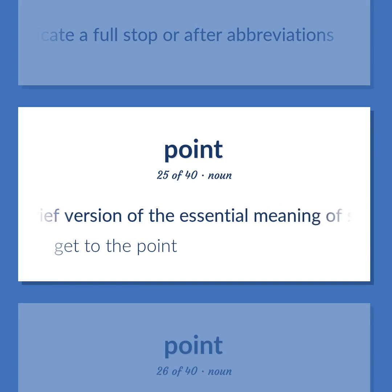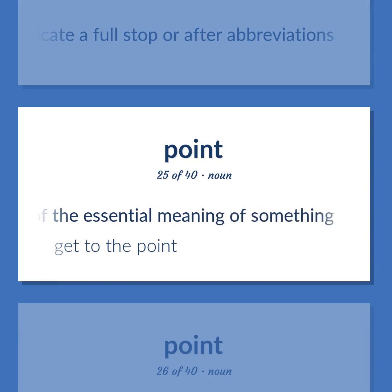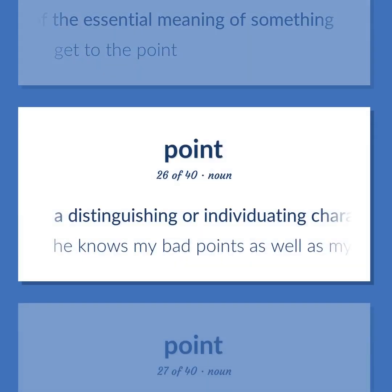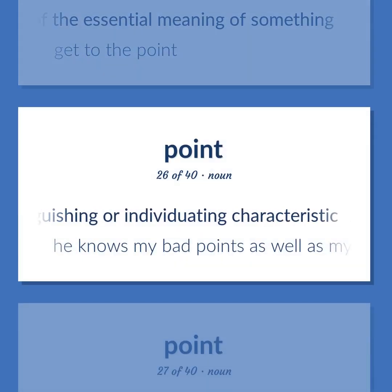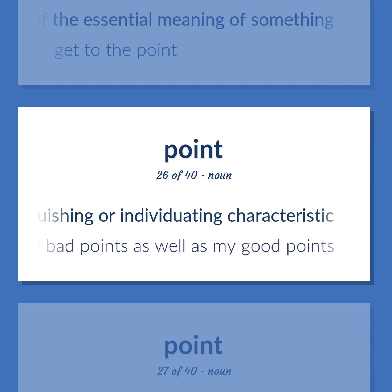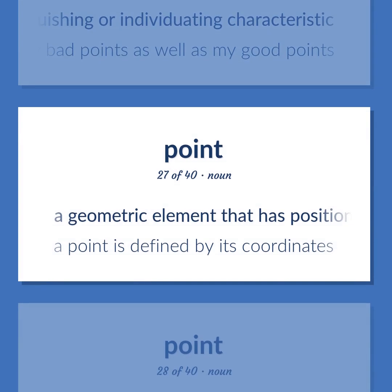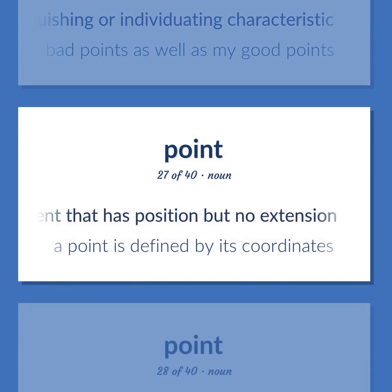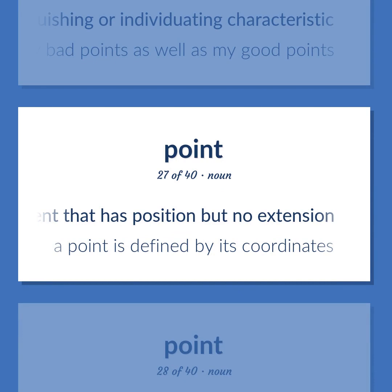Point: A punctuation mark placed at the end of a declarative sentence to indicate a full stop, or after abbreviations. A brief version of the essential meaning of something. Example: Get to the point. A distinguishing or individuating characteristic. Example: He knows my bad points as well as my good points. A geometric element that has position but no extension. Example: A point is defined by its coordinates.